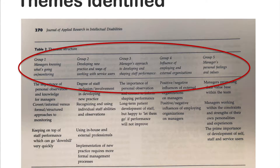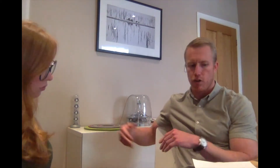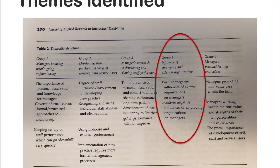Number four was about the influence of employing and external organisations. The regulatory requirements from CQC, or the administrative requirements that an organisation places on its manager — they're all things that can directly impact that manager's ability to get out and spend time with staff teams, observe practice, and so on. There are positive and negative aspects: some organisations are really clear that their managers need to spend a certain amount of time with their staff teams, so it can be very supportive of elements of practice leadership, but it can also stifle it.